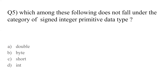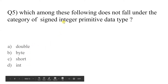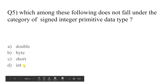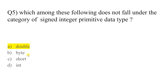Question number five: which among these does not fall under the category of signed integer primitive data type? The options are double, byte, short, int. The word 'integer' here helps us — int, short and byte are all integer primitive data types. So the answer is double. Double does not fall under the category of signed integer primitive data type.